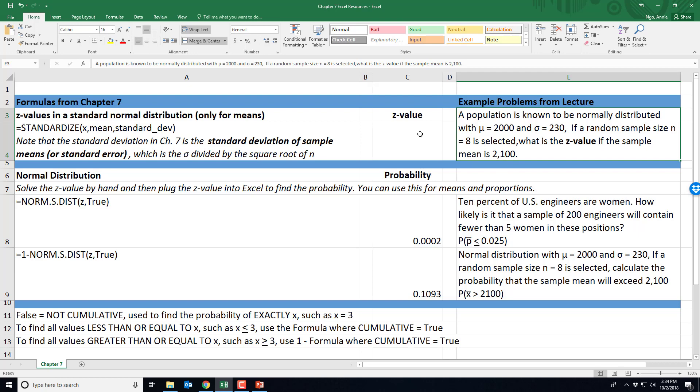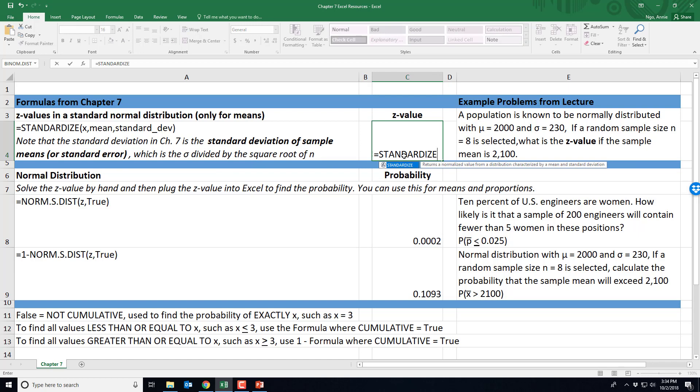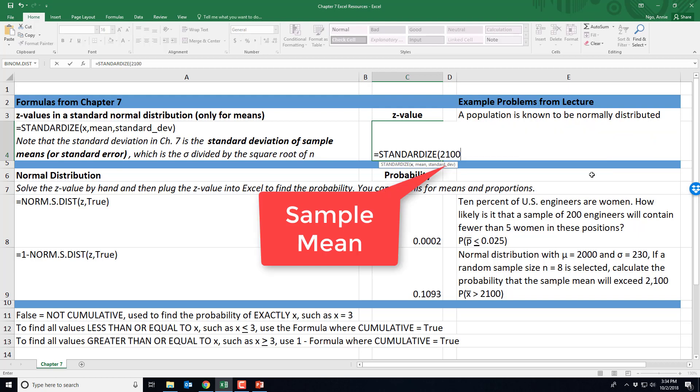So in other words, you can actually use this formula to get the z value and then plug it into our formula down here. So to do that, we will type in equals STANDARDIZE, parentheses, our x that we're interested in is at 2100.